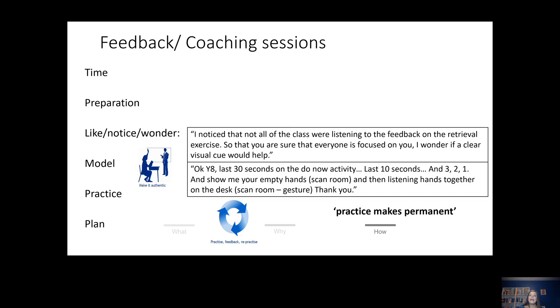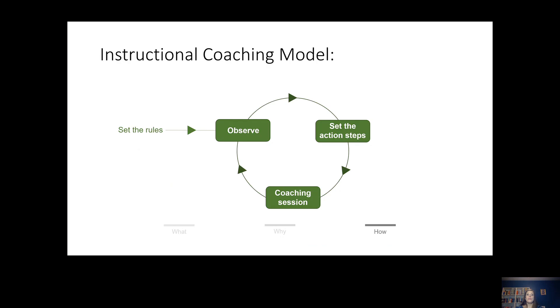Finally, you can co-plan exactly when this action step is going to be used in specific lessons that week and you can look forward to seeing it in action when you go into your next observation, which you plan in for that next week. So this process continues. So you have a model that looks like this. So at the beginning, we're setting the rules and going into the observation, but then it follows in this cycle.